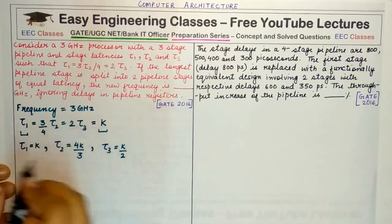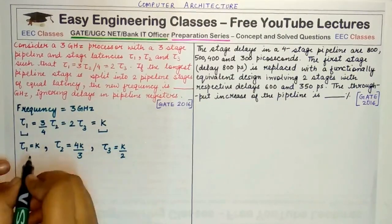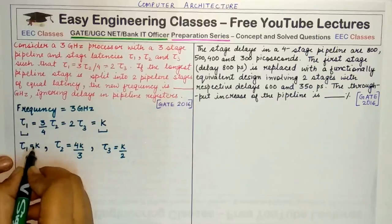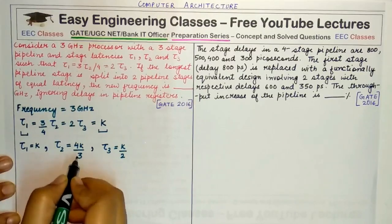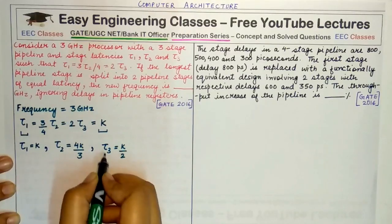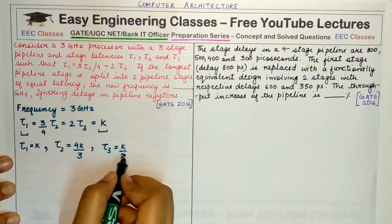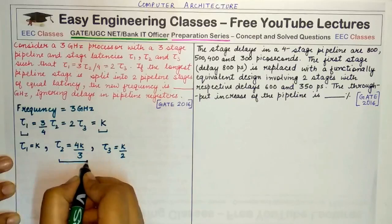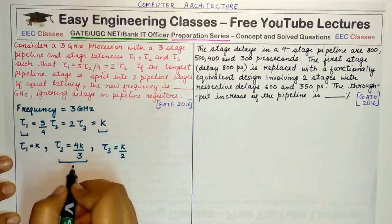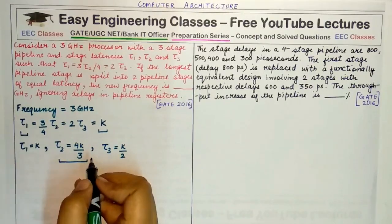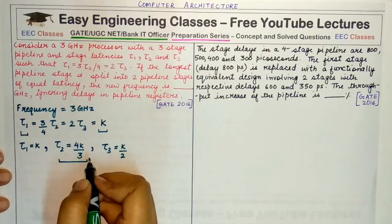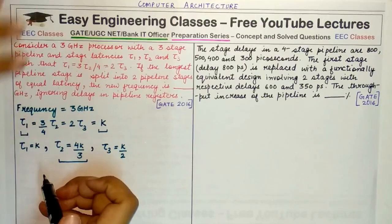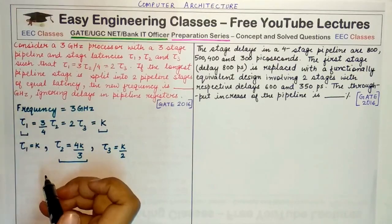Out of these three, we see that τ1 is K, τ2 would be approximately 1.3K, and τ3 is 0.5K. So this is the maximum latency, and this would contribute to the actual frequency of the three-stage pipeline. Equating these two values, the frequency and latency, inverting the frequency and equating it to the maximum latency, we get 4/3 K = 1/3.